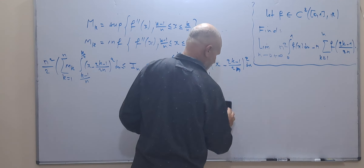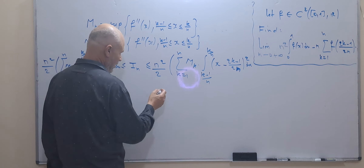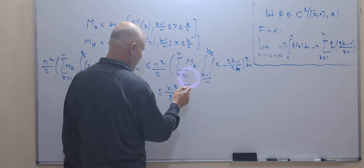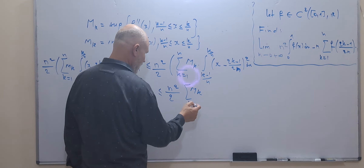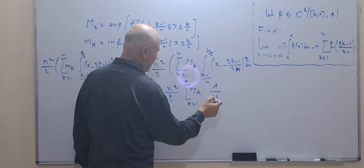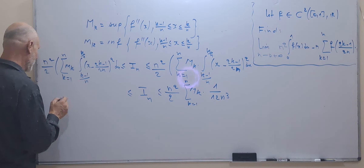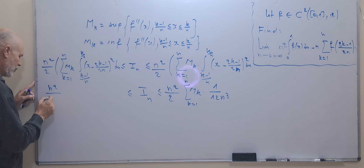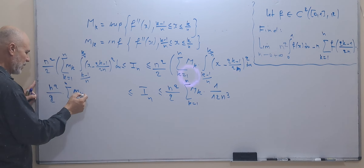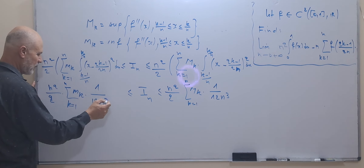This is an elementary integral, which gives us: the integral from (k−1)/n to k/n of (x − (2k−1)/2n)² dx equals 1/(12n³). Therefore, aₙ is less than or equal to (n²/2) times the sum of Mₖ times (1/12n³) from k=1 to n, and greater than or equal to (n²/2) times the sum of mₖ times (1/12n³) from k=1 to n.